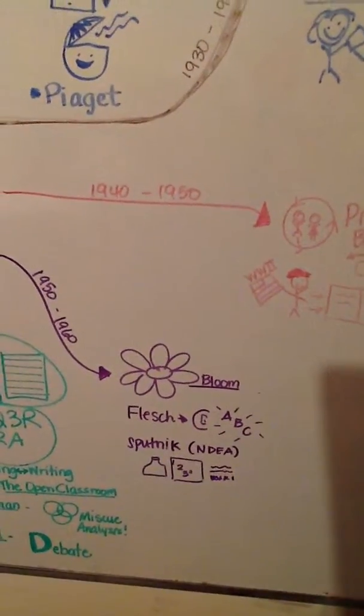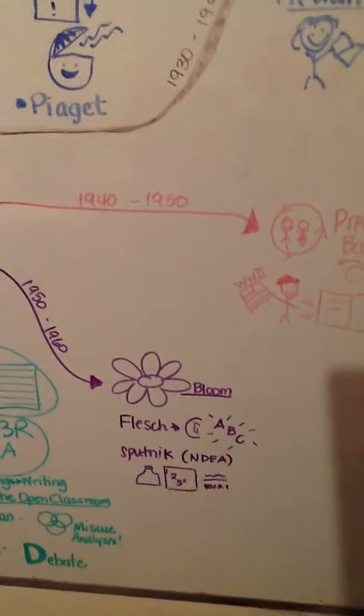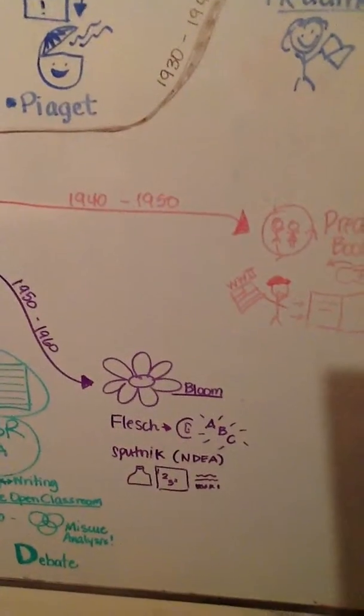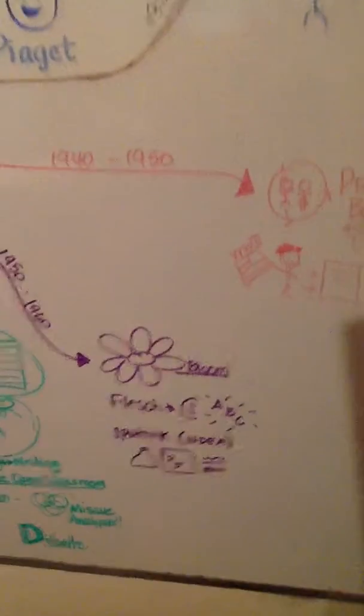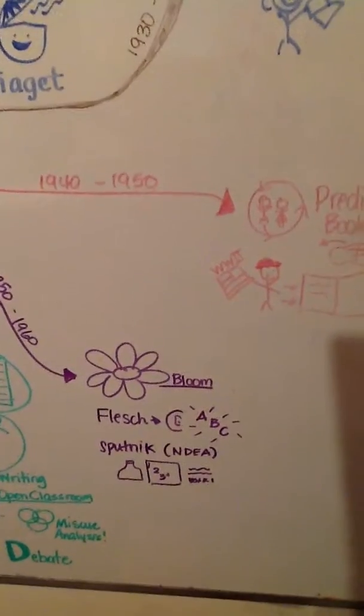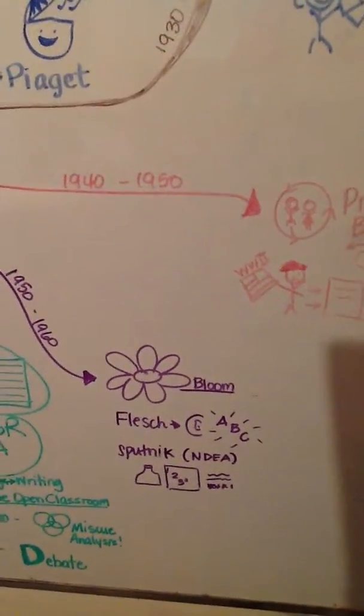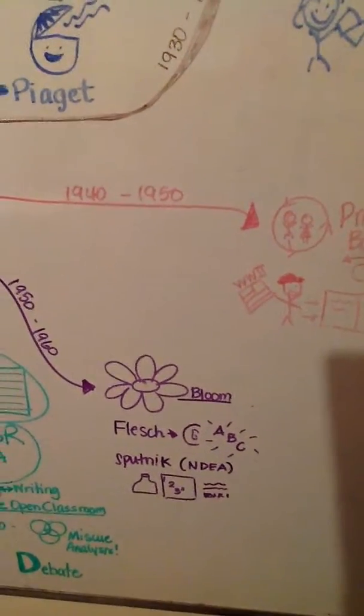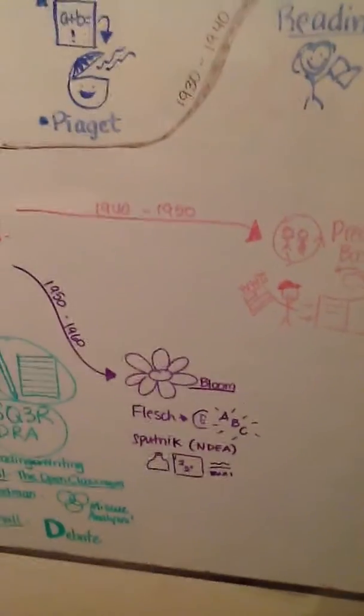Flesch brought back phonetics. He thought you should learn your sounds and then your blends instead of memorizing sight words, and you need to do it while you were writing, which I thought was neat. I put the little beaker, the math, and the words there because, partially because of Sputnik, science, math, and foreign language became important again. So the National Defense Education Act provided funding for them and we started paying more attention to math and science.